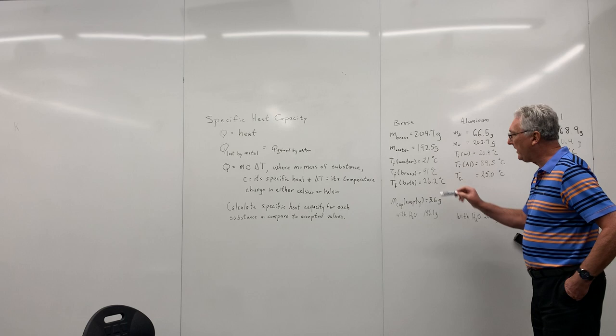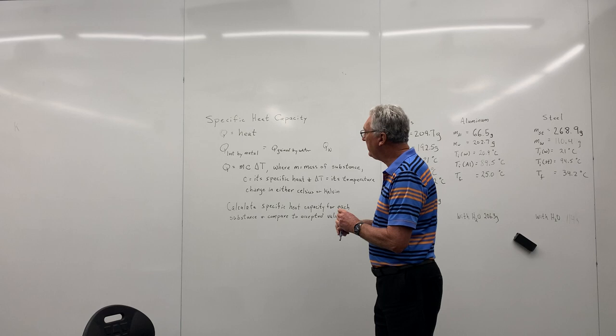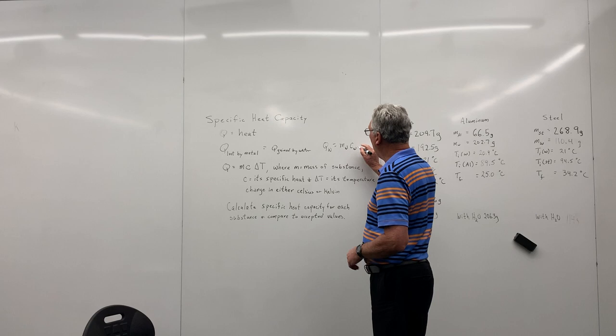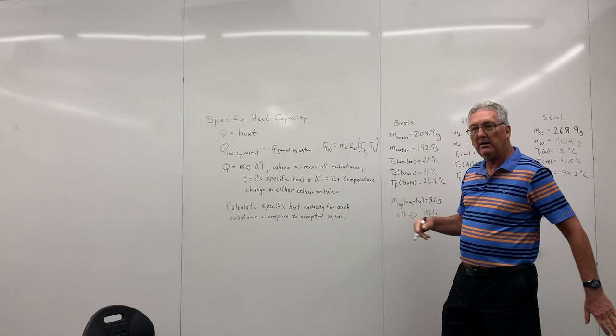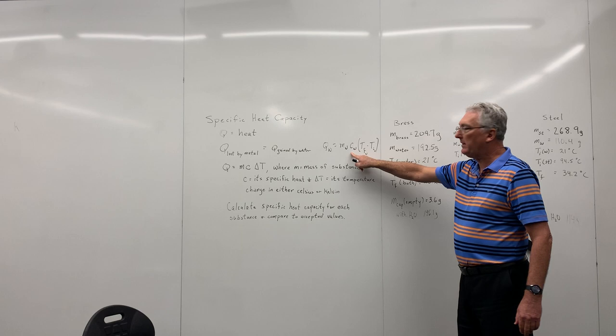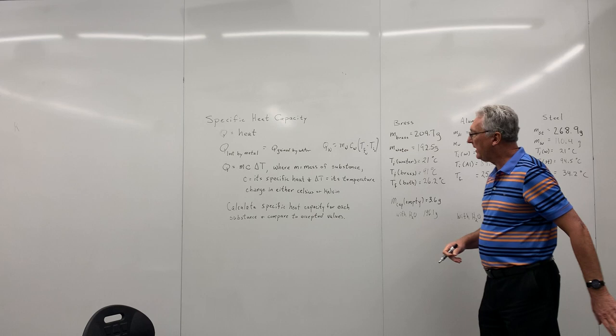So what this heat equation is going to look like is going to be the change, the energy that the water gained is equal to the mass of the water times the specific heat of water times T final minus T initial of the water. So this is all subscript water here. And of course, the heat lost by the metal is going to be the specific heat of the metal. I'm sorry, the mass of the metal times the specific heat of the metal times the, and the initial temperature of the metal is higher. So make all of your quantities positive. So make sure this difference is going to be positive.